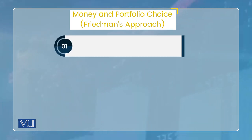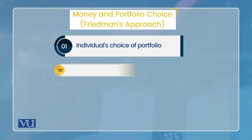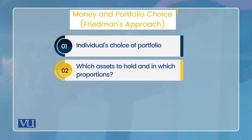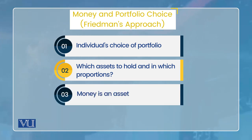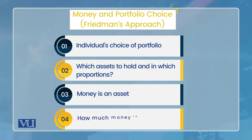तो point यह है कि जो portfolio choice theory हमने discuss की, how that is applicable to the theory of money demand। जो choice of portfolio होता है, उसका basic objective यह होता है कि कौन सा asset hold किया जाए और किस proportion में किया जाए। अब money भी तो एक asset है, तो money की उपर भी portfolio theory apply होगी। यहाँ से money demand की theory derive हुई — portfolio theory of money demand। और question वो ही रहेगा: money hold करें या न करें, और किस proportion में करें — यानि money बाकी assets के मुकाबले में किस proportion में हो।